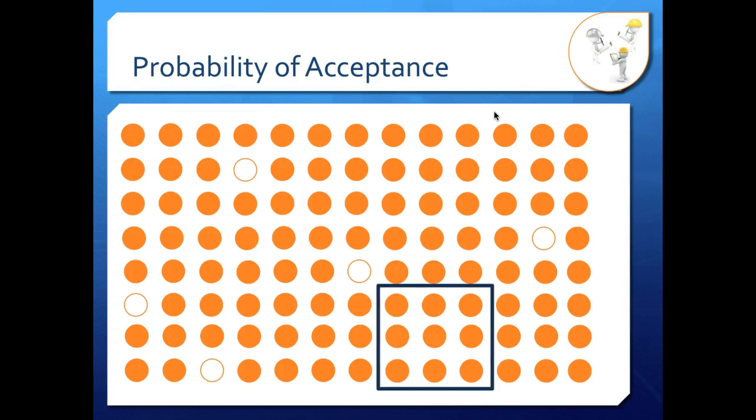Let's take a few more samples. If we sample over here and we're looking for orange balls, it doesn't really matter what C is, 0, 1, 2, 3, 4. We are going to accept the lot based on this sample. If we sample over here, we have two non-conforming units. So we're okay if C is 2 or higher, but if C is 0 or 1, we need to reject that lot.